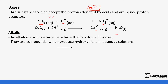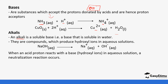Alkalis are compounds which produce hydroxide ions in aqueous solution. For example, sodium hydroxide in solution dissociates to form sodium ions and hydroxide ions. When an acid reacts with a base or hydroxide ions in an aqueous solution, a neutralization reaction occurs — the reaction between a base and an acid forms a neutral solution.